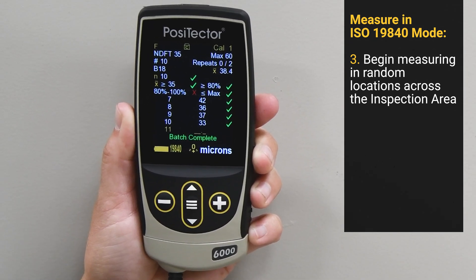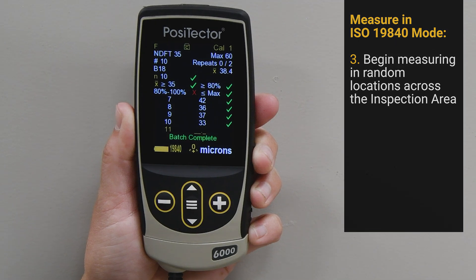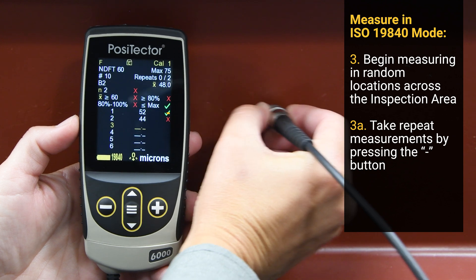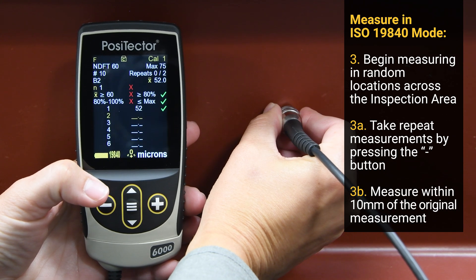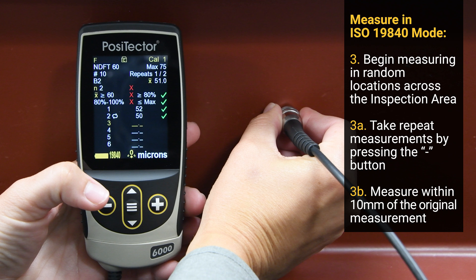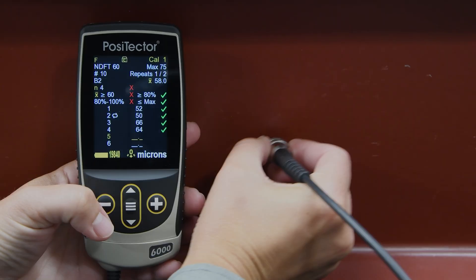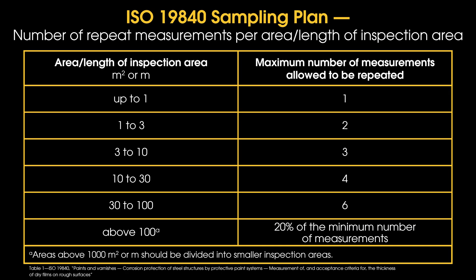A check mark or X will indicate whether the individual measurements passed or failed based on batch specifications. If an individual measurement is not equal to or greater than 80% of the NDFT, or is greater than or equal to the maximum specified DFT, the reading can be repeated by pressing the minus button. Take a repeat measurement within 10 mm of the original measurement location. If the repeat measurement still does not meet the criteria, that measurement cannot be deleted and retaken. The maximum number of repeat measurements allowed in the batch is determined by the size of the inspection area.